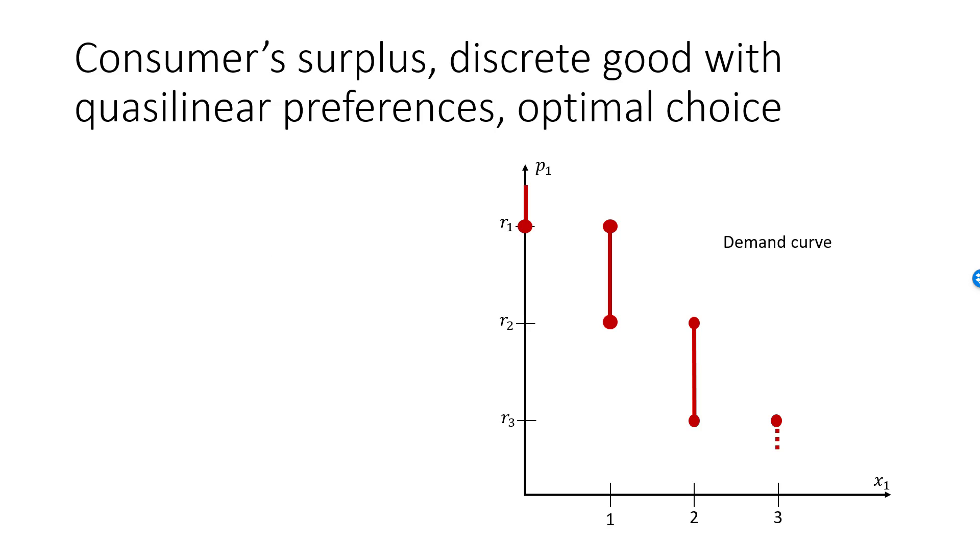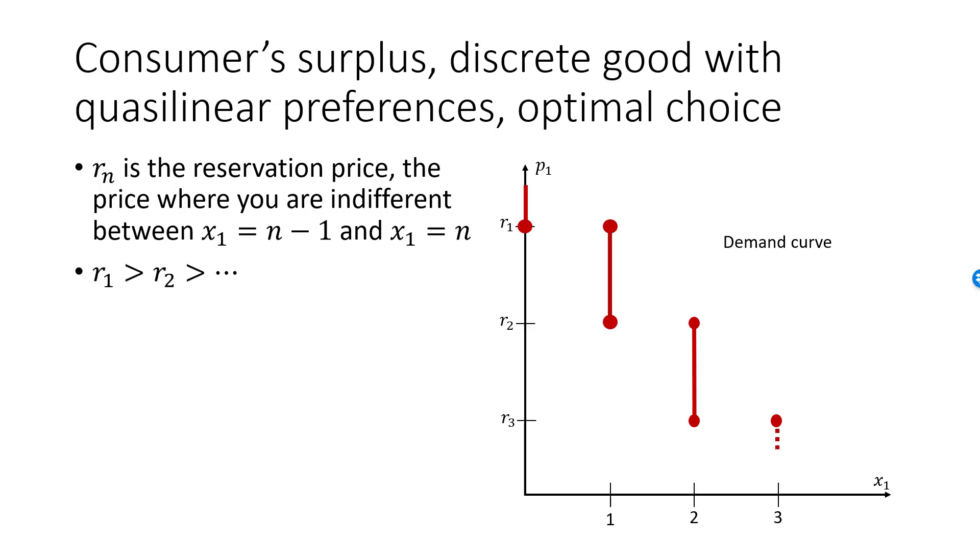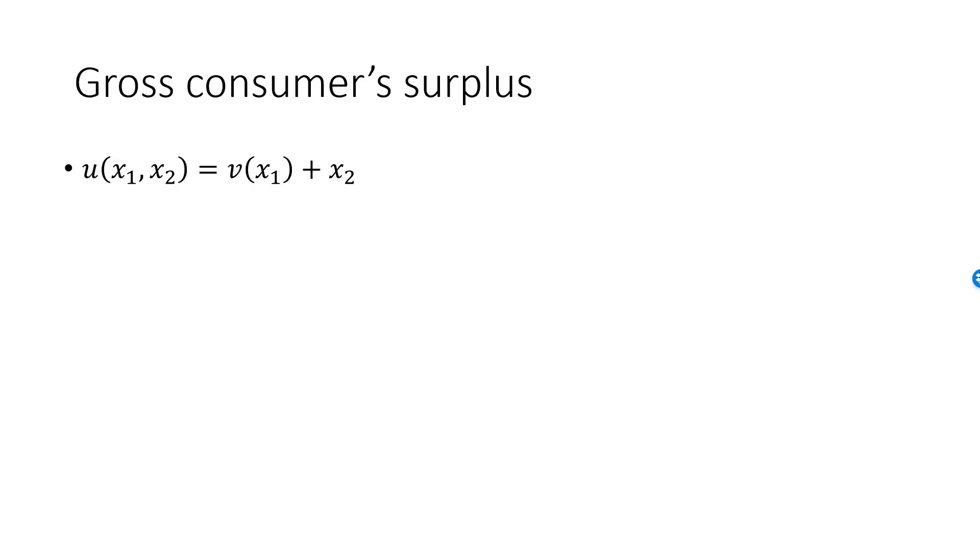A quick review of optimal choice, reservation prices, and demand curve for this setup. R1 is the reservation price where you are indifferent between 0 and 1 units of good 1. In general, Rn is the reservation price where you are indifferent between consuming n minus 1 and n units of good 1. Good 1 is assumed to be ordinary and the reservation prices are strictly decreasing. We consume n units of good 1 whenever p1 is between Rn and Rn plus 1. In a previous lecture, we demonstrated that if the utility function is quasilinear, then the nth reservation price equals v of n minus v of n minus 1.